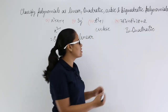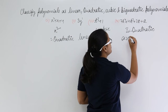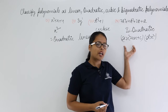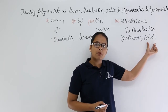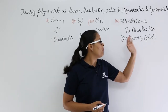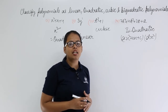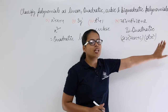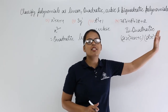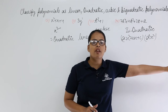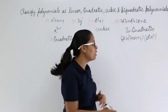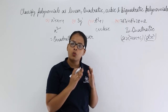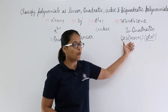And why bi-quadratic? Let's take an example. The highest power in this expression is 2, so this is quadratic, and the highest power in this expression as well is 2, so this is also a quadratic equation. We only consider the highest power in x; we are not going to look at lower powers or constant values. So both are quadratic equations.